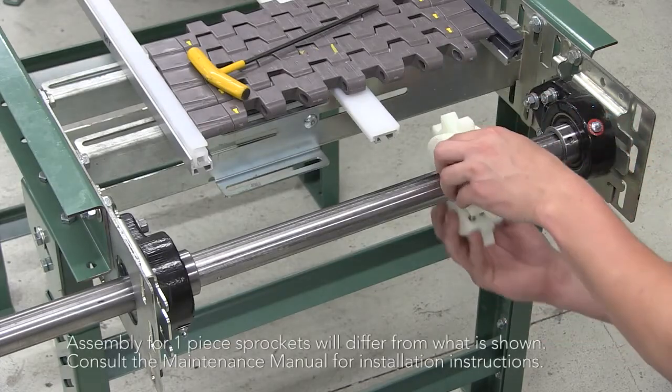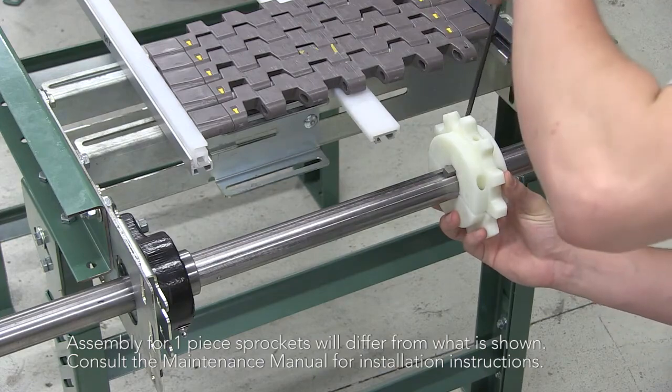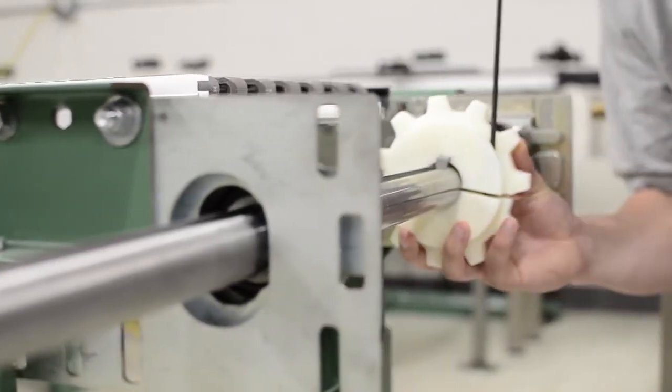Hold both halves on the shaft ensuring the shaft's key and sprocket keyway fit correctly. Then tighten the cap screws with an allen wrench.